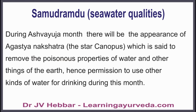Sea water should not be used for drinking except during Ashwaja month, that is between September to October, or the Autumn season. During Ashwaja month there will be appearance of Agustya Nakshatra, or the star of Canopus, which is said to remove the poisonous properties of water and other things of the earth. Hence, use of other kinds of water is allowed during this season.